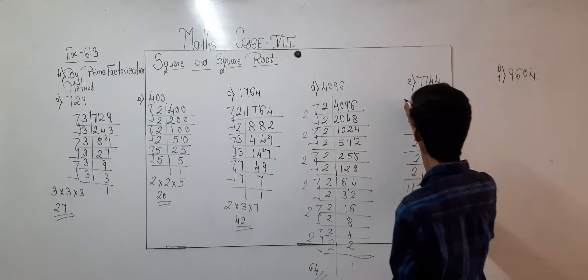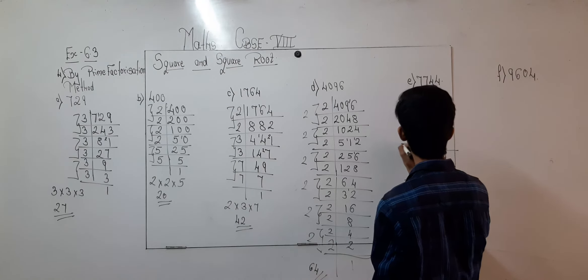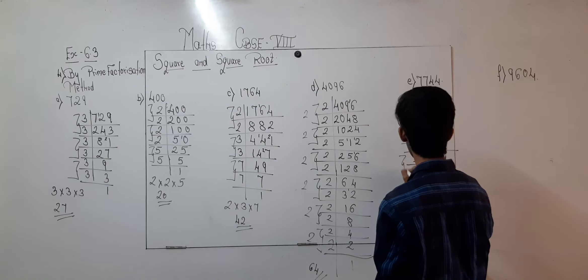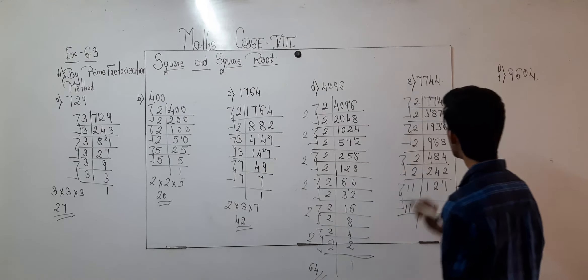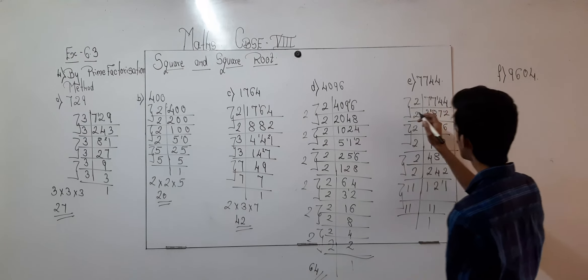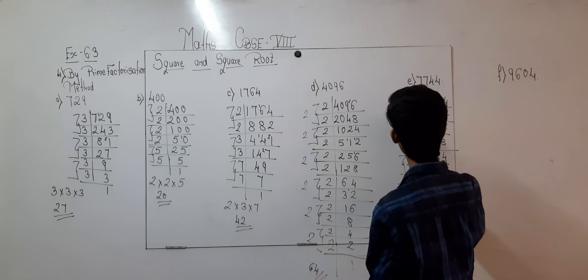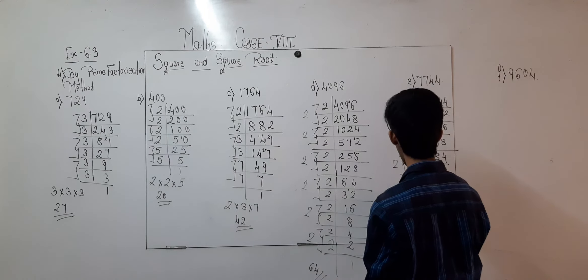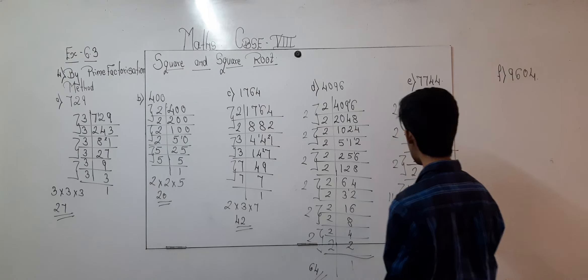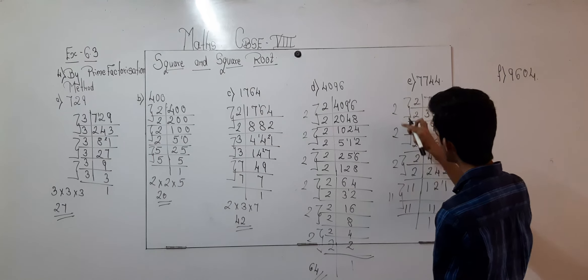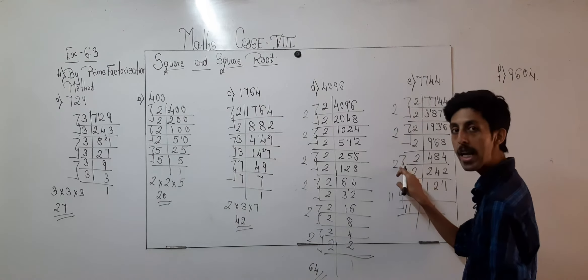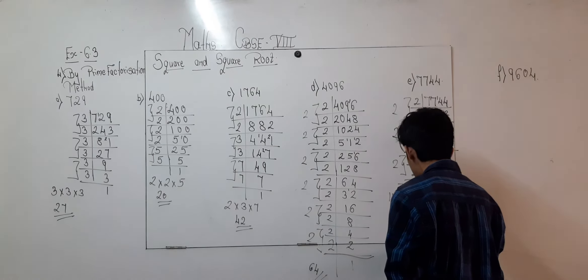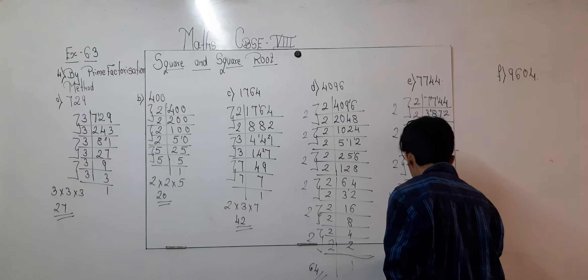So over here we have 2, 2, 2, 2 and 11. So 2 times 2 is 4, 4 times 2 is 8, 8 times 11 gives 88. So the square root of 7744 is 88.